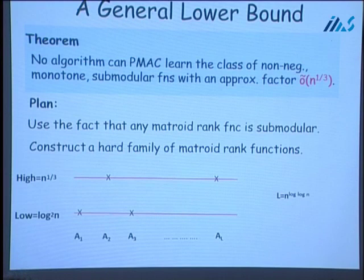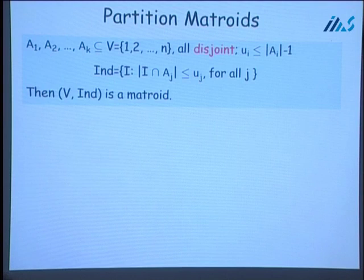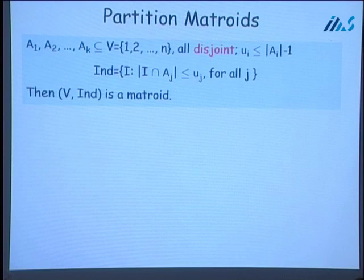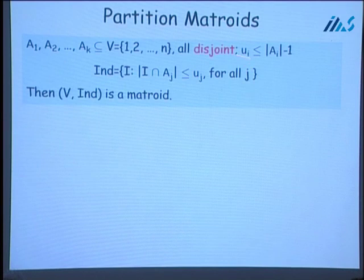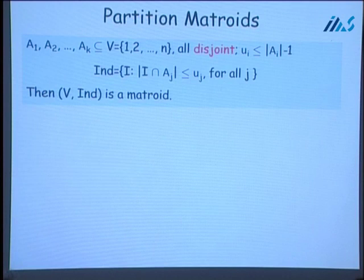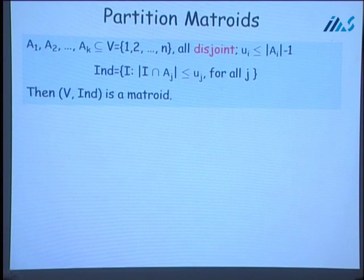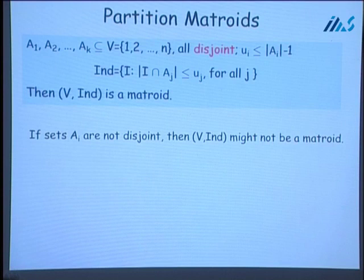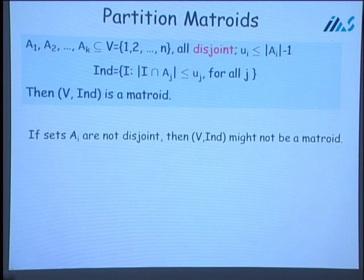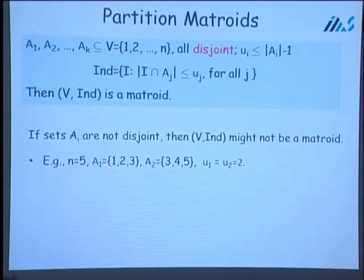I would like to give you a feel for the type of matroids used to prove this lower bound. A well-known class is partition matroids, where we have K disjoint subsets A1, A2, ..., AK of the ground set, and K numbers U1, ..., UK where each Ui is smaller than the size of Ai. The independent sets are those subsets of the ground set where the cardinality of the intersection between I and Aj is upper bounded by Uj for all j. If the sets are disjoint, we get a matroid. However, if the sets are not disjoint, this might not be a matroid.